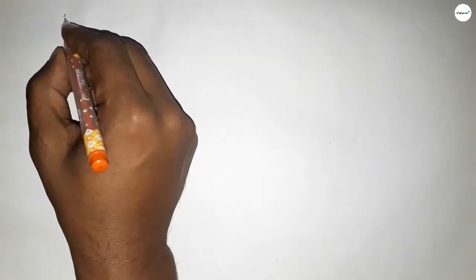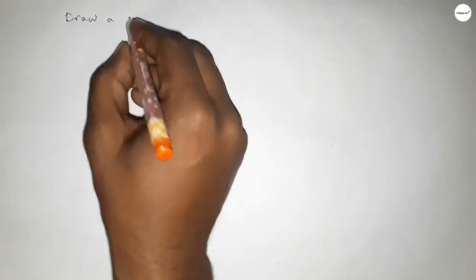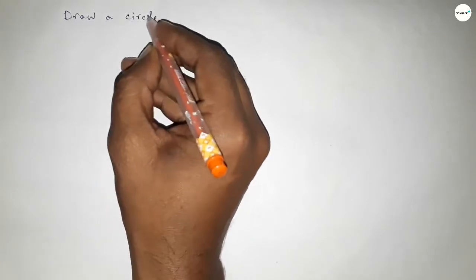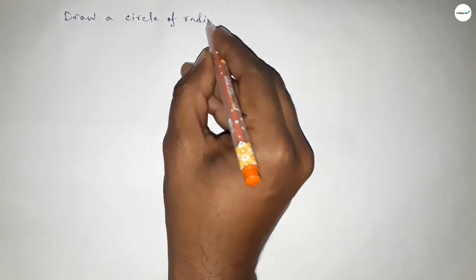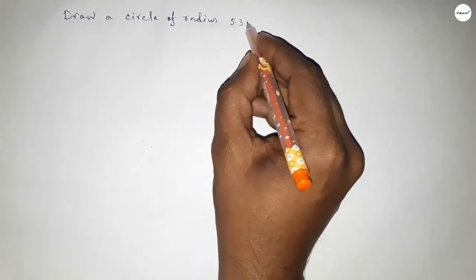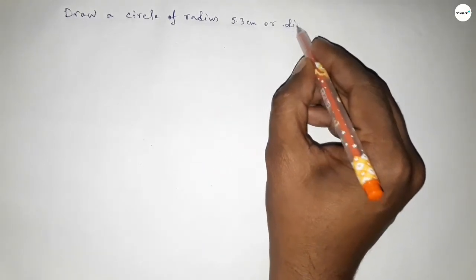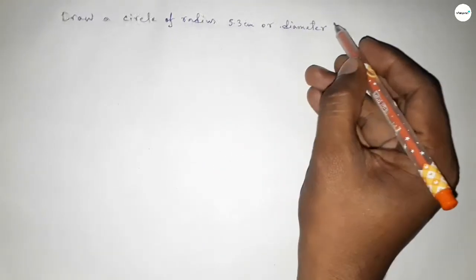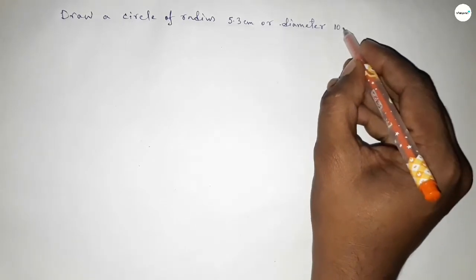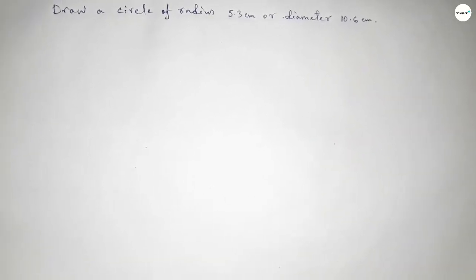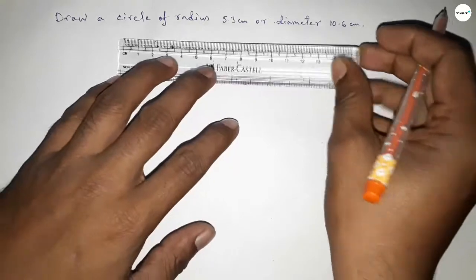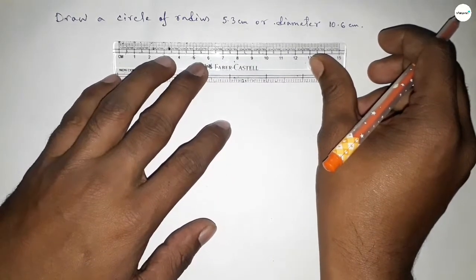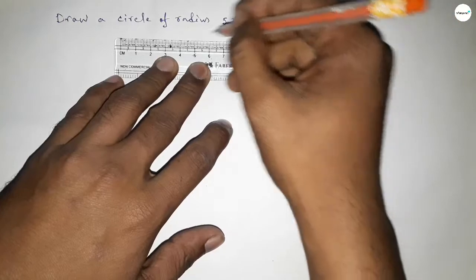Hi everyone, welcome to SI Chair Classes. Today in this video we have to draw a circle of radius 5.3 centimeter or diameter 10.6 centimeter. So let's start the video. First of all, drawing the radius 5.3 centimeter.